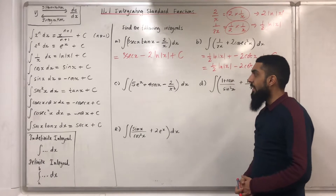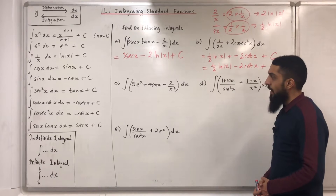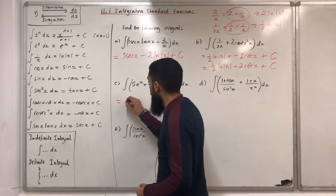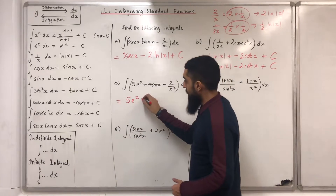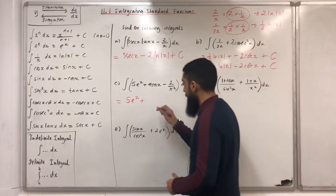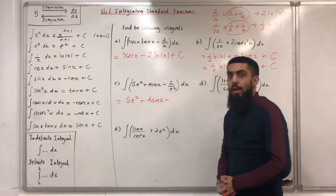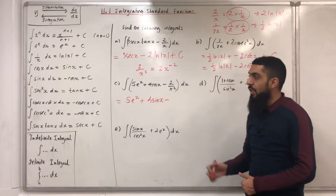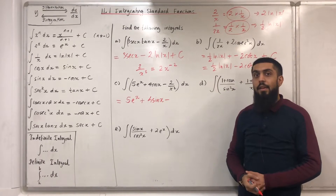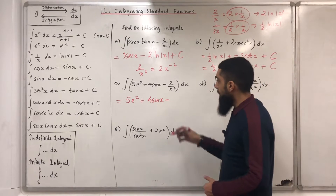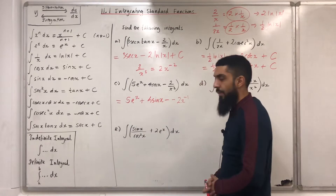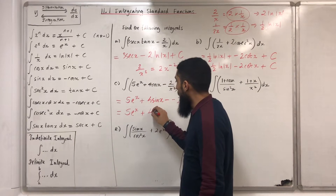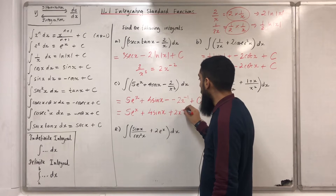Part c: integral of 5e^x plus 4 cos x minus 2/x² dx. Integrating 5e^x gives 5e^x. Plus integrating 4 cos x gives 4 sin x. Minus 2/x² is the same as 2x^(−2). To integrate, we add 1 to the power and divide by the new power, giving minus 2x^(−1). Simplifying gives 5e^x plus 4 sin x plus 2x^(−1) plus c.